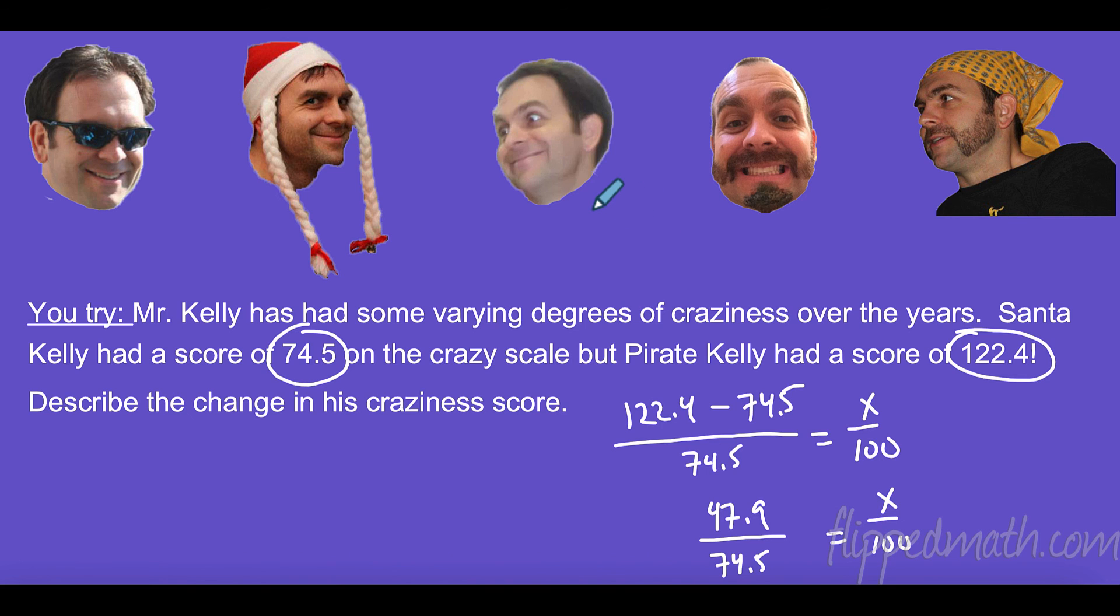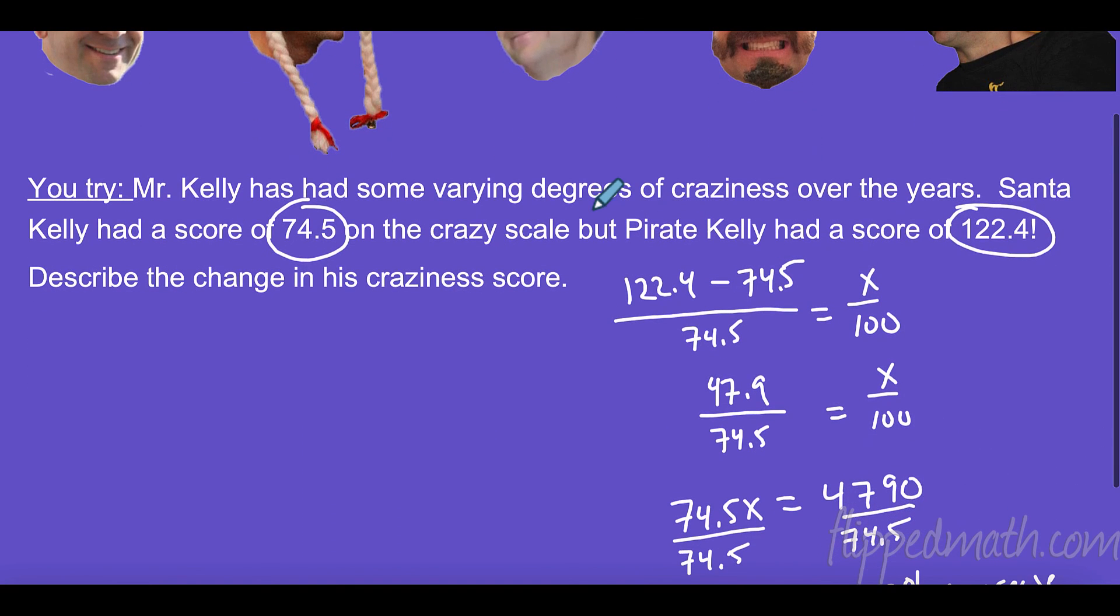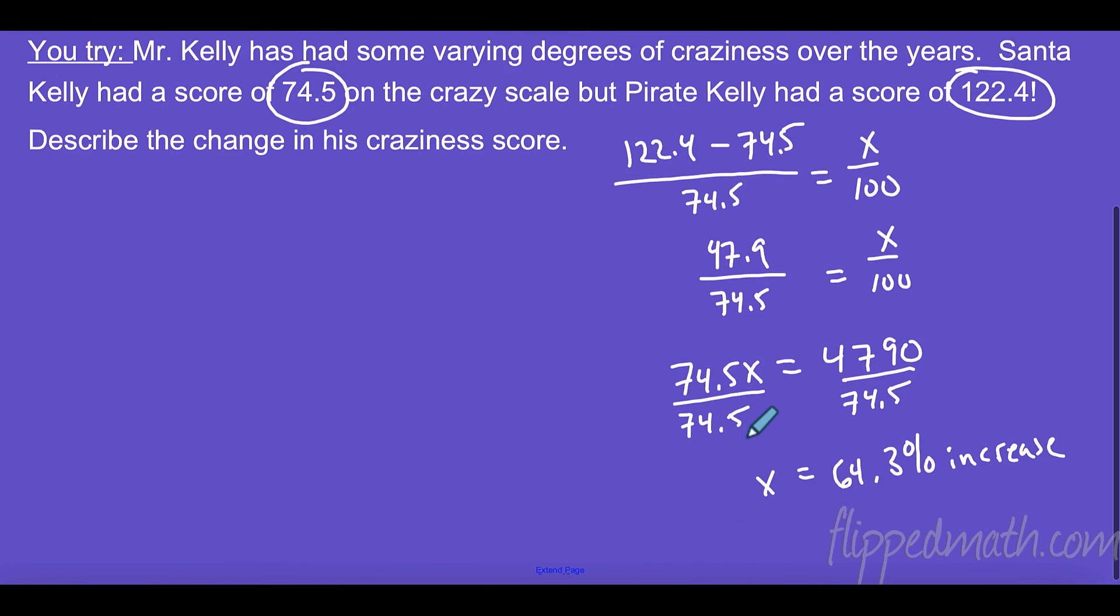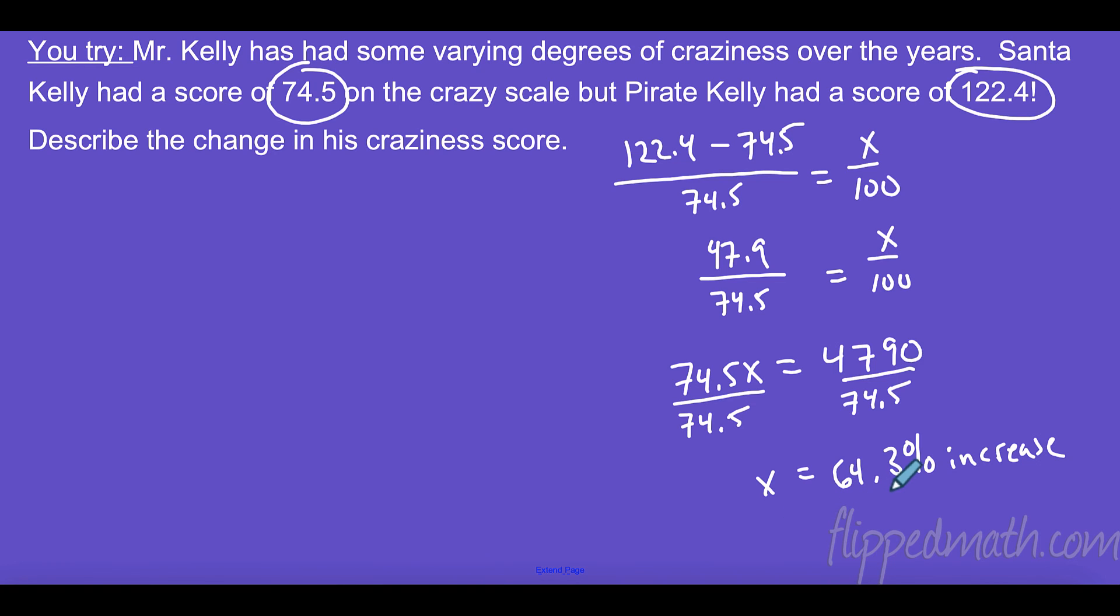Alright, I sure hope you paused this one and tried it on your own because that's really important. This is the first attempt in learning for you, and you need to really figure out if you know how to do this. So let's take a look here. His original craziness score was a 74.5 and his new score is 122.4. I subtracted those here, put it over the original score 74.5. I got 47.9 over 74.5, and then when I divided it out I got a sixty four point three percent increase in his craziness score, which is about right if you know him.